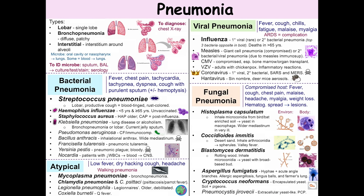Nocardia is a partially acid-fast filamentous bacterium. You inhale it from the soil, and if you have low white blood cells or a low CD4 count, you are at risk of acquiring this. What we really worry about is hematogenous spread, particularly to the brain and spinal cord, where in patients with immunodeficiency there is an 85% mortality.